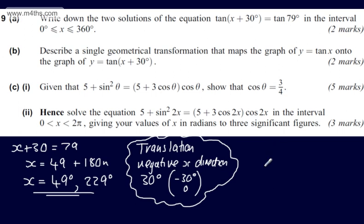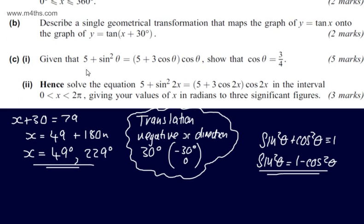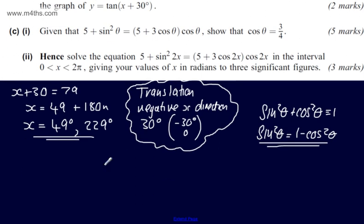What I'm going to do is use a trig identity. Sine squared theta plus cos squared theta will always give us 1. We can rearrange this and we can say that sin squared theta will give us now 1 minus cos squared theta. I'm going to substitute this into the left-hand side of the equation. So what we're going to have is 5 plus, instead of sin squared theta, 1 minus cos squared theta.